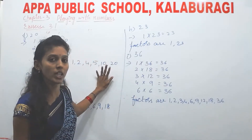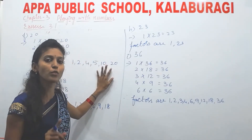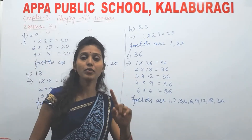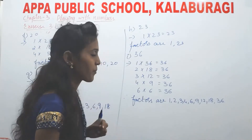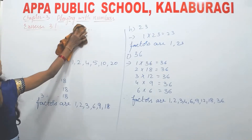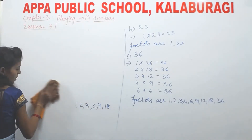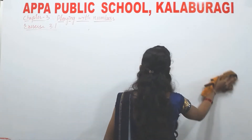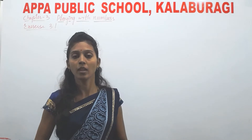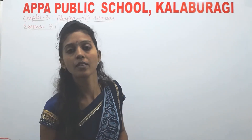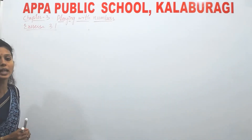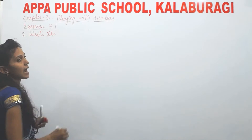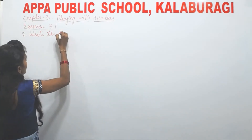Observe the question. In the first question they said write all the factors of the following numbers. But in the second question they ask to write the first five multiples — not all the multiples. Why? Because factors are finite and countable. But multiples are uncountable. If you go on writing, you can never end. That's why they said first five multiples.